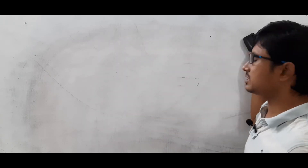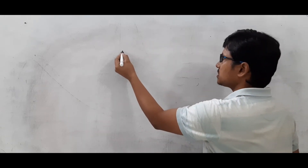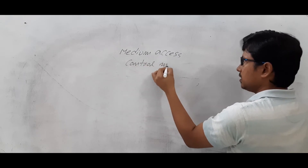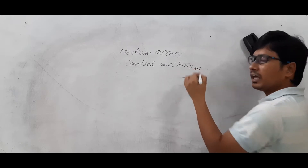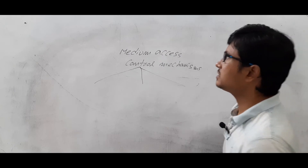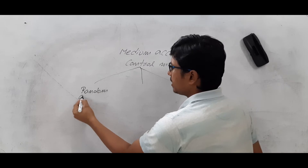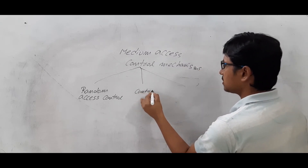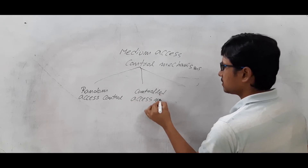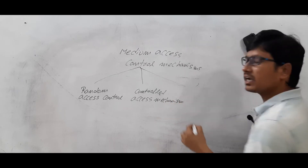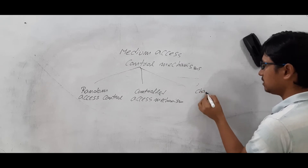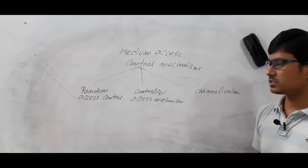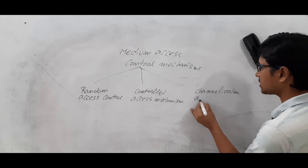Now let me discuss the various categories. Access control mechanisms — we also call them medium access control mechanisms — are classified into basically three types: random access control mechanisms, controlled access mechanisms, and channelization access control mechanisms. So the medium access control mechanisms are broadly classified into these three categories.